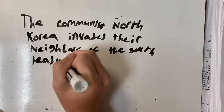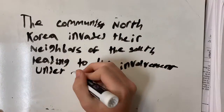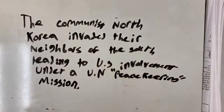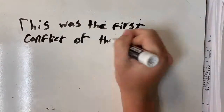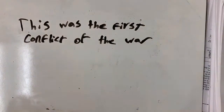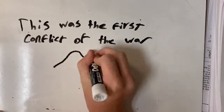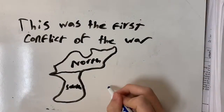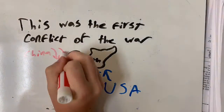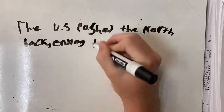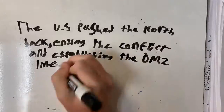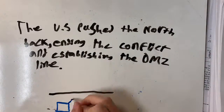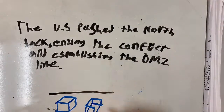We forgot to add the Korean War, so here we go. The North Korean communists, aided by China, invaded the South. The US pushed them back. General Douglas MacArthur lost his position because he went mentally unstable and requested to bomb the entire country — a big mistake.